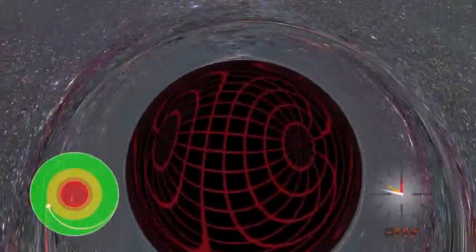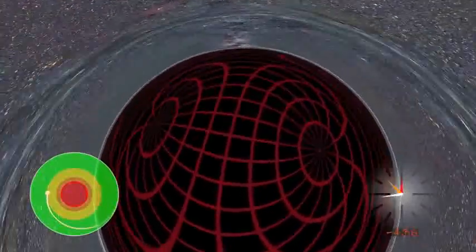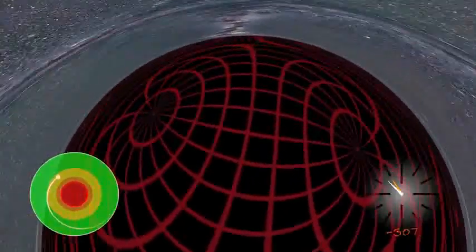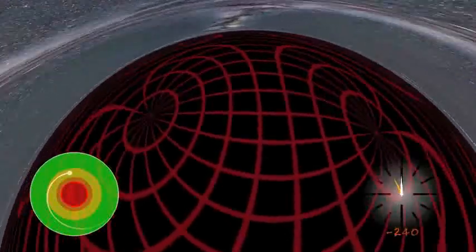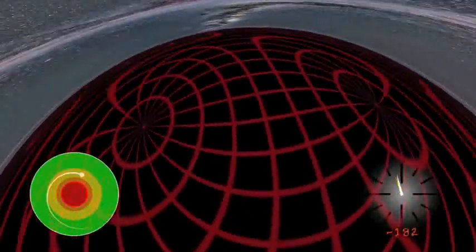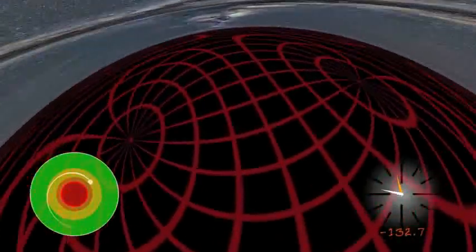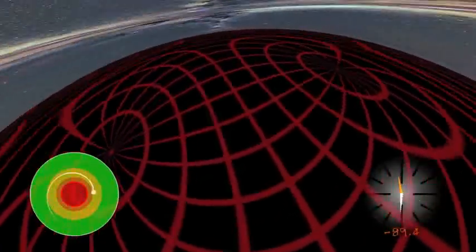At about two Schwarzschild radii, we reach the Risky Zone, an area of unstable orbits. Any slip up here, such as a small firing of our thrusters, would randomly send us either headlong into the black hole or flying away from it.